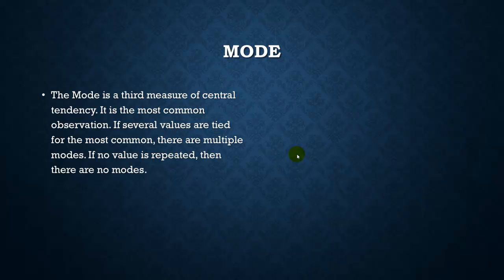Our third measure of central tendency is called the mode. A mode is just the most common observation. If several of them are tied, then there are multiple modes, and if none of them are repeated, there are no modes. So let's look at this first example. Suppose we have the numbers 5, 8, 5, 5, 4, 4. Since 5 is repeated 3 times, and 4 is only repeating twice, we can say 5 is the mode.